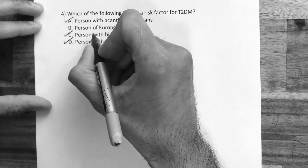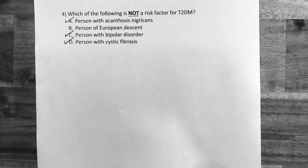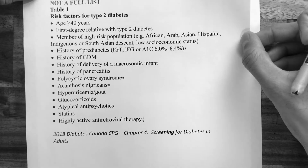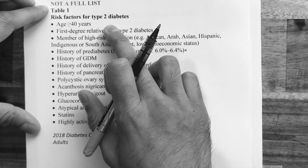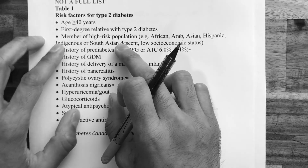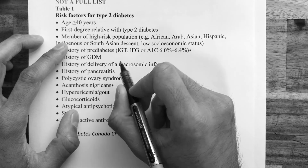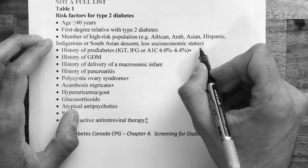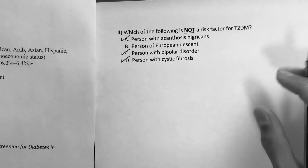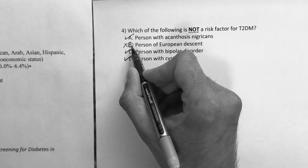So we already know the answer. A person of European descent — there are high-risk populations listed in table 1, chapter 4: African, Arab, Hispanic, Asian, Indigenous, and South Asian descent, as well as low socioeconomic status. European descent is not listed, so it is not a risk factor. The answer is B — all are risk factors except European descent.